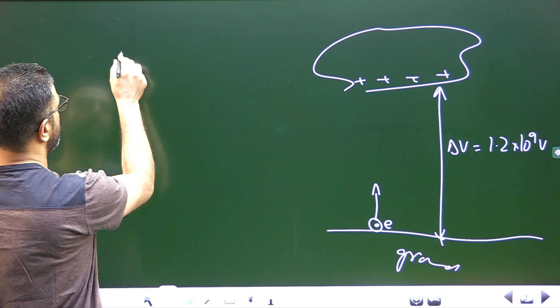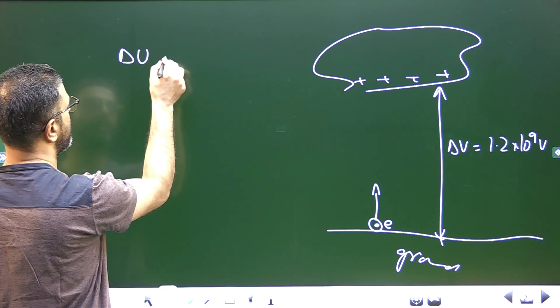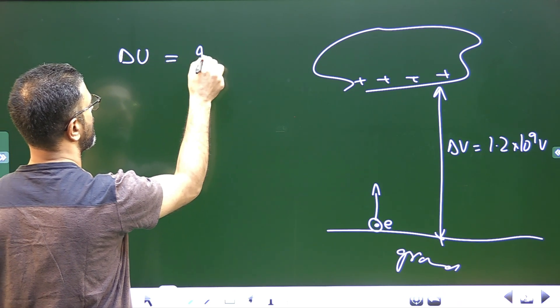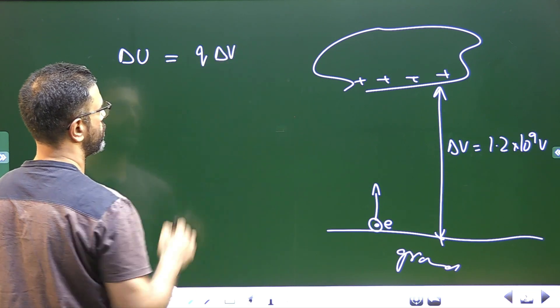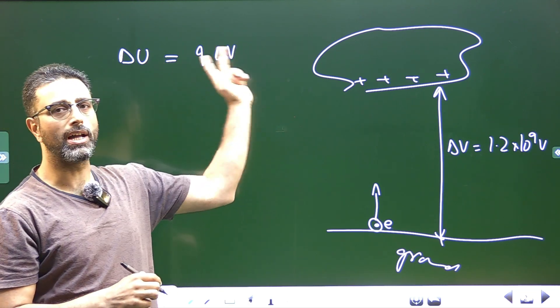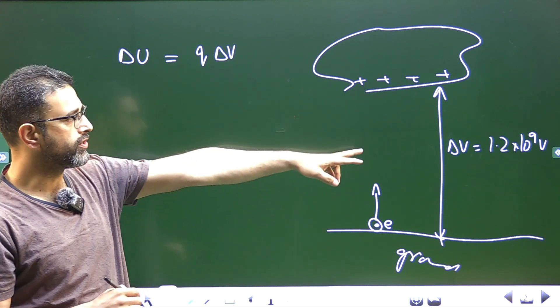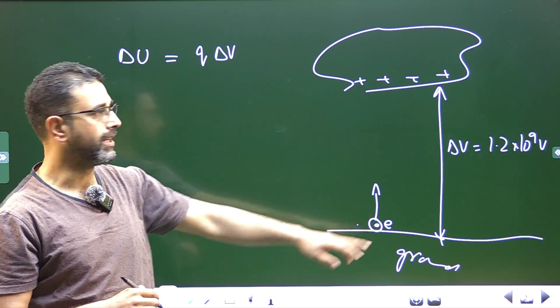So you must be aware that change in potential energy is equal to charge times the change in potential. Change in potential is given, charge is that of an electron.